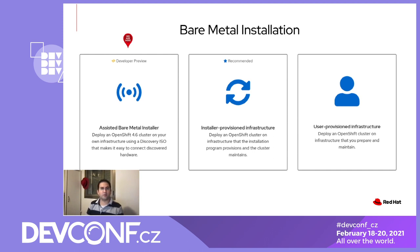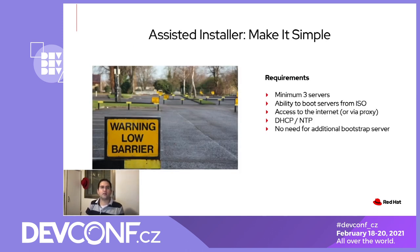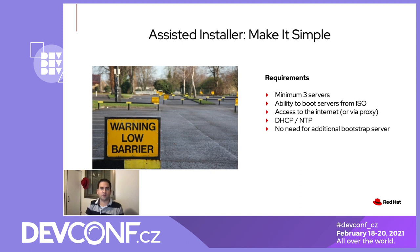Assisted Installer simplifies the deployment experience for OpenShift clusters with very minimum external requirements. Why do we need yet another installer? The main goal is to make bare metal OpenShift installation as simple and achievable for a lot more users. You'll need at least three bare metal or virtual machines creating a three-master setup, with the option to add more workers. Assisted Installer will validate that minimal hardware requirements are met. You need to be able to boot those machines from an ISO. The host will need to communicate to cloud.redhat.com either directly or via HTTP proxy. The host should be able to obtain an IP address from DHCP or manually configured, and also connect to an NTP server. Assisted Installer has smart defaults for NTP settings in case you don't have one.